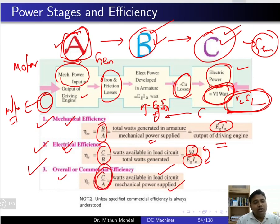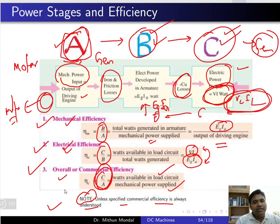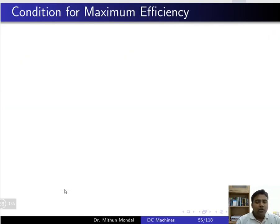Unless specified otherwise, commercial efficiency is always understood. We will use commercial efficiency by default; electrical or mechanical efficiency is calculated only when explicitly required.